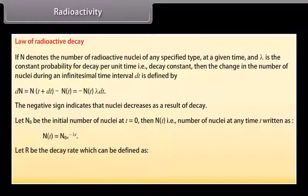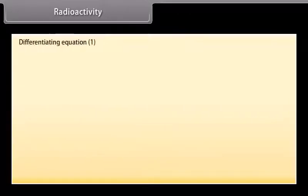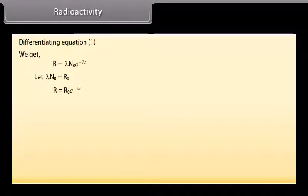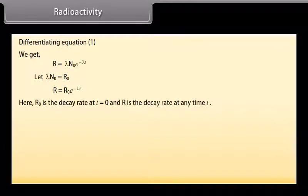Let R be the decay rate, which can be defined as R is equal to minus dN by dt. Differentiating, we get R is equal to lambda N0 e to the power minus lambda t. Let lambda N0 equal to R0. R is equal to R0 e to the power minus lambda t. Here R0 is the decay rate at t is equal to 0, and r is the decay rate at any time t.